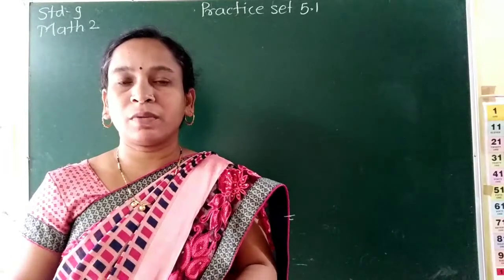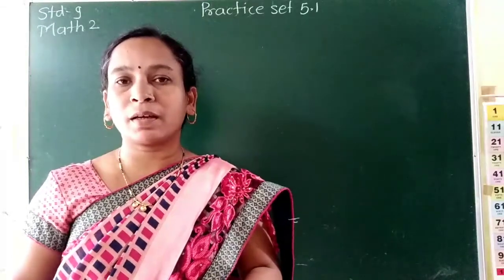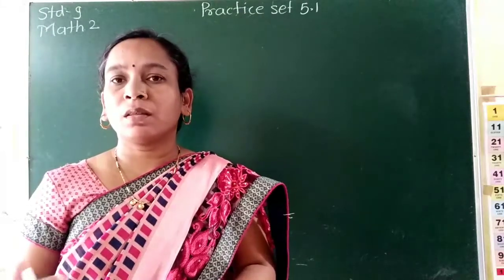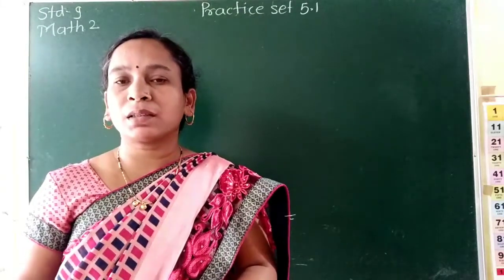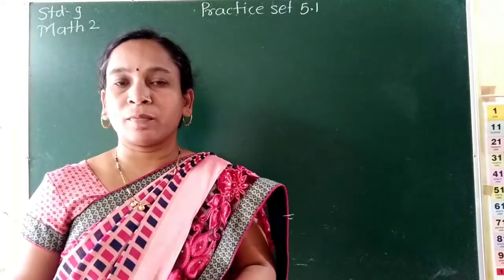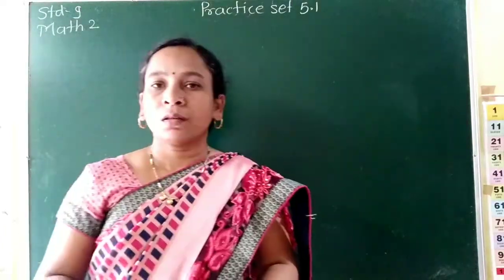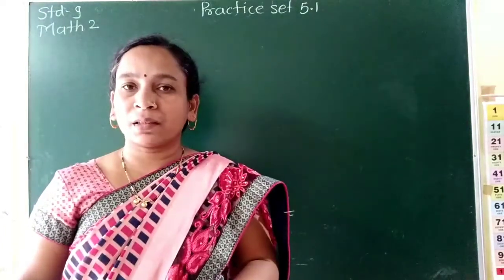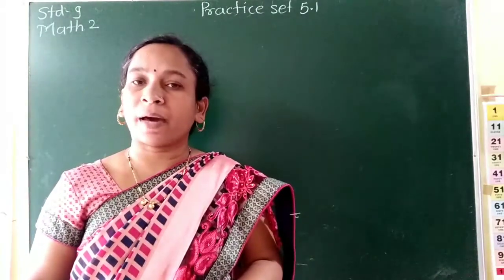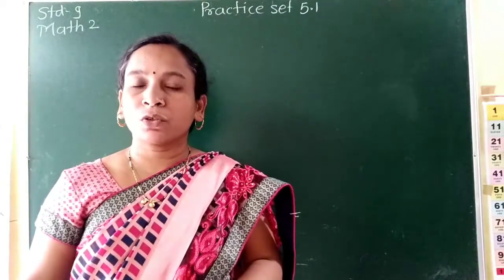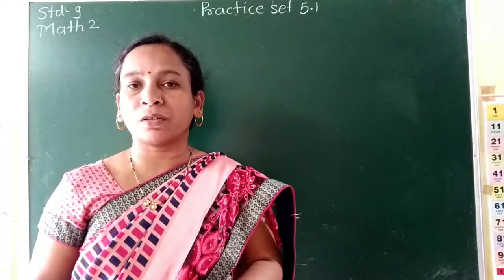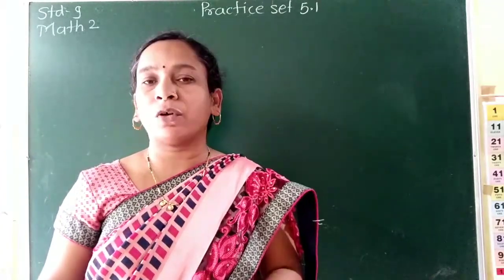Hello everyone, once again I will welcome you in my YouTube channel. Today we are going to see practice set 5.1 from the bilateral chapter from Maths 2. This practice set is based on the properties of a quadrilateral that is a parallelogram. Let's study the examples which are based on the properties of a parallelogram.